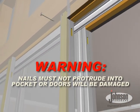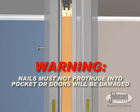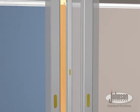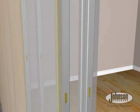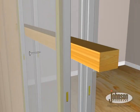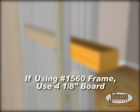Nails that are too long will protrude into the pocket and can damage the doors. To provide a firm nailing surface, slip a 2 1⁄8 inch board between the split jams temporarily. If using the 1560 frame, use a 4 1⁄8 inch board.